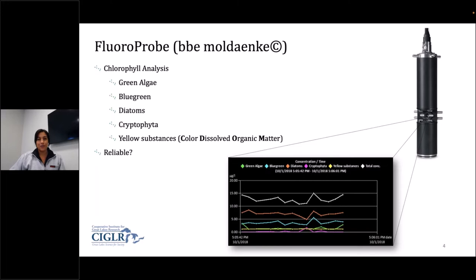Our chlorophyll measuring instrument is the fluoroprobe. We are using the BBE model. Fluoroprobes are great for chlorophyll analysis — they are able to identify five different classes within the algae blooms: green algae, blue-green algae or cyanobacteria, diatoms or brown algae, and cryptophyta and yellow substances, which is a proxy for color-dissolved organic matter. CDOM, or color-dissolved organic matter, can confuse the sensor sometimes and trick it into seeing things that aren't there. These seem like plug-and-play instruments, but our question is: how reliable is it? And we need some method to compare it to.